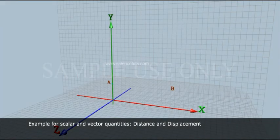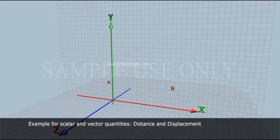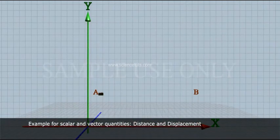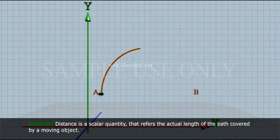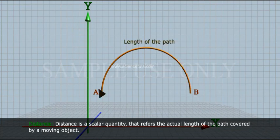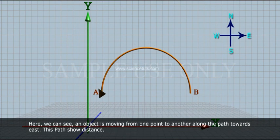Example for scalar and vector quantities: Distance and displacement. Distance is a scalar quantity that refers to the actual length of the path covered by a moving object. Here, we can see an object is moving from one point to another along the path towards east. This path shows distance.